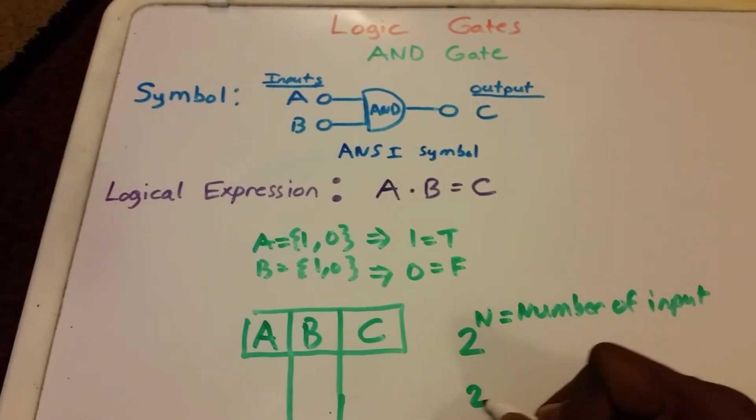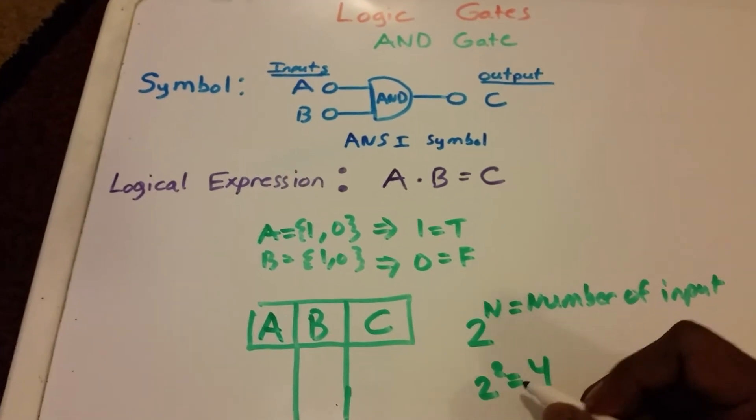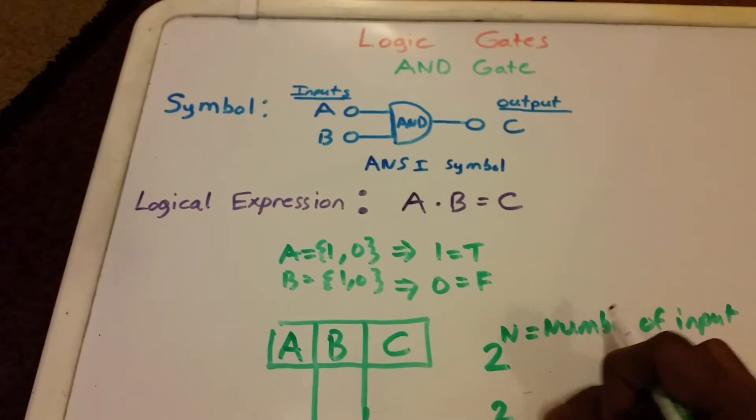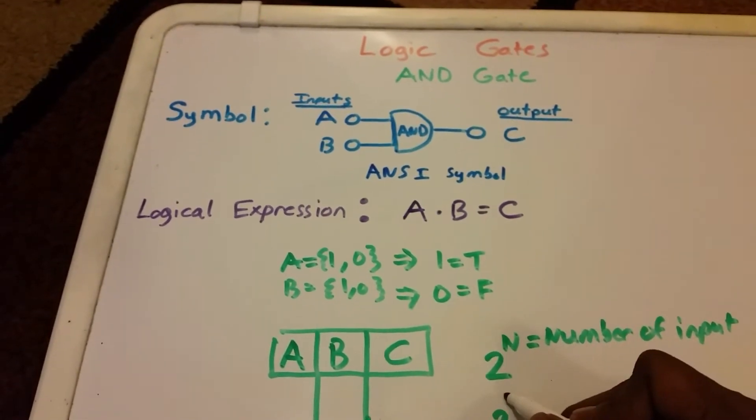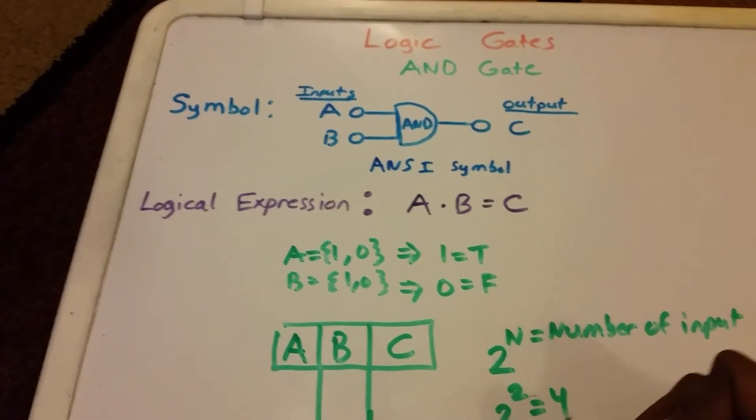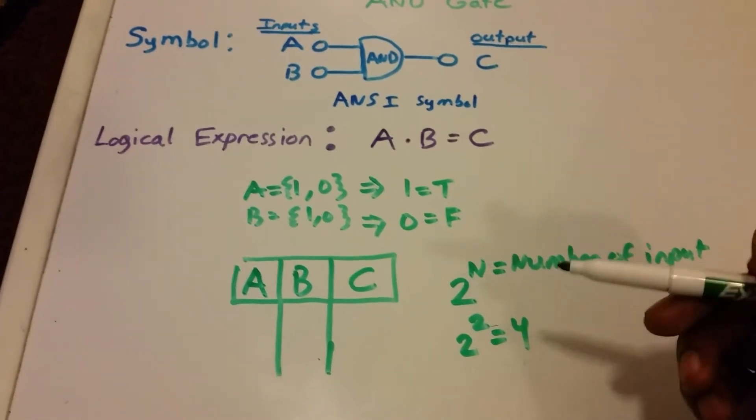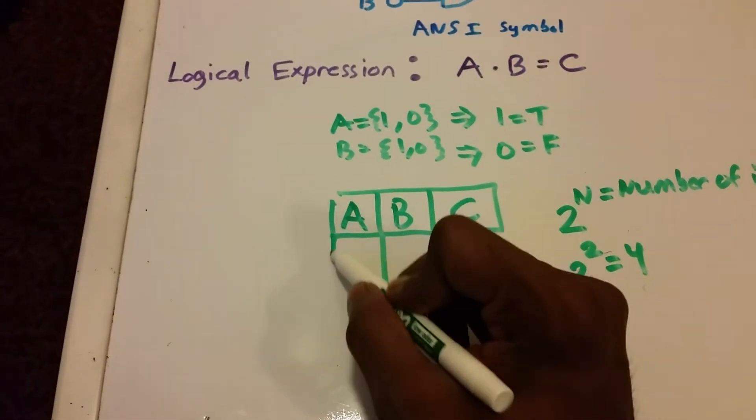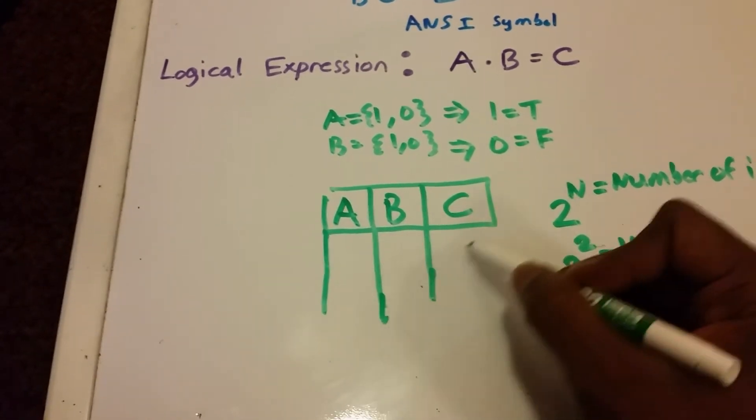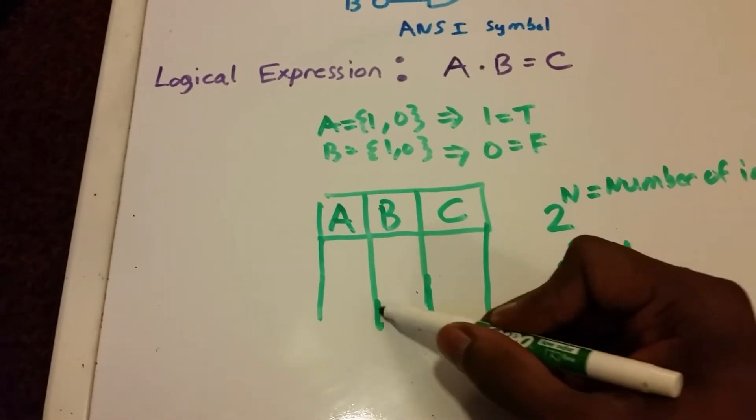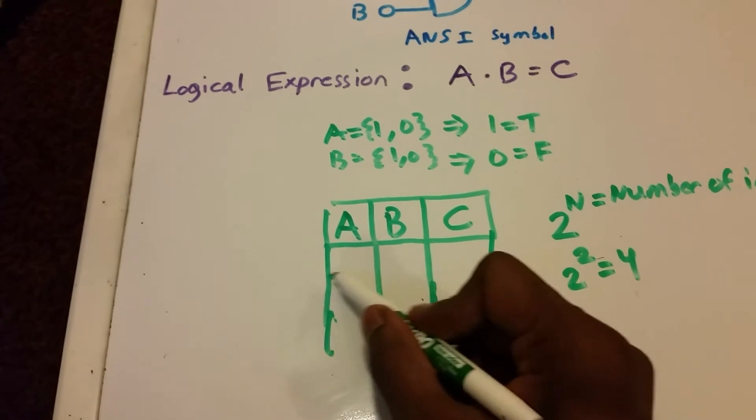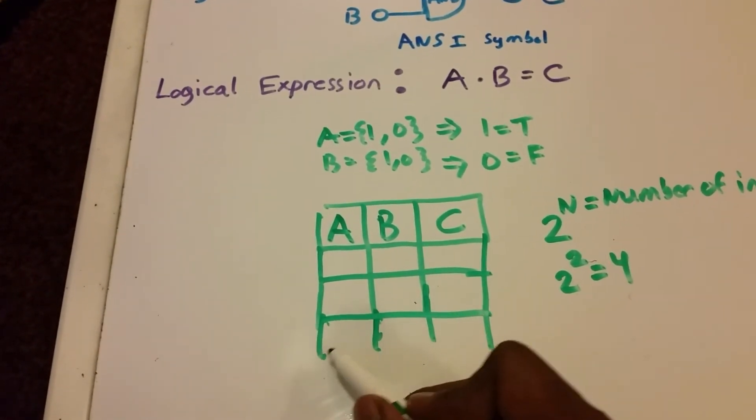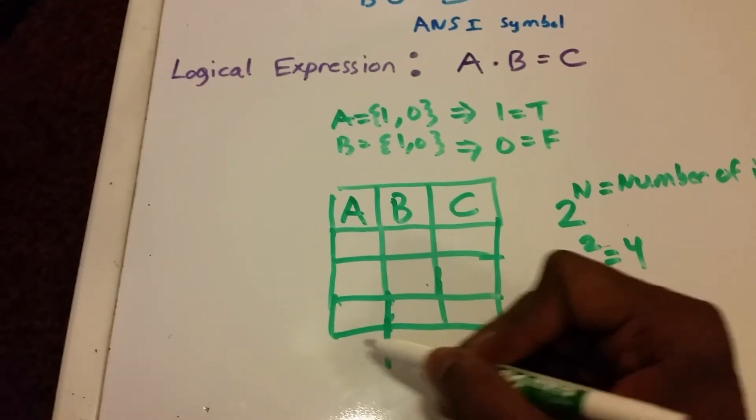So we're going to have 2 to the power of 2, which equals 4. So we're going to have four rows, four possible outputs. Let me go ahead and create our four rows—one row, two rows, three, and create our last one here.